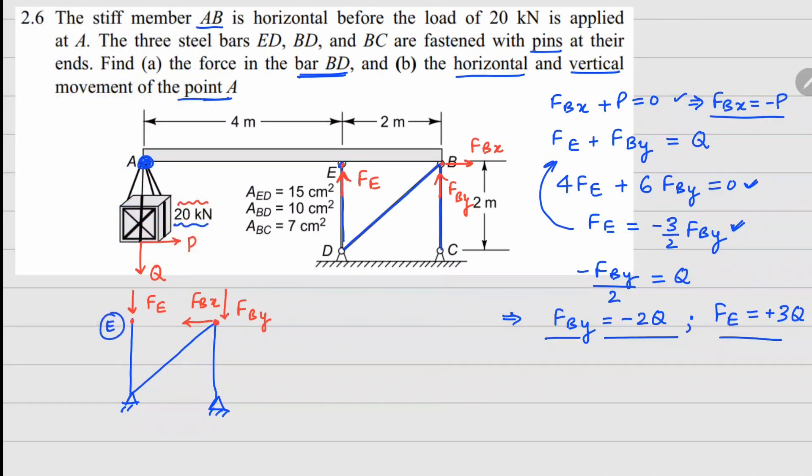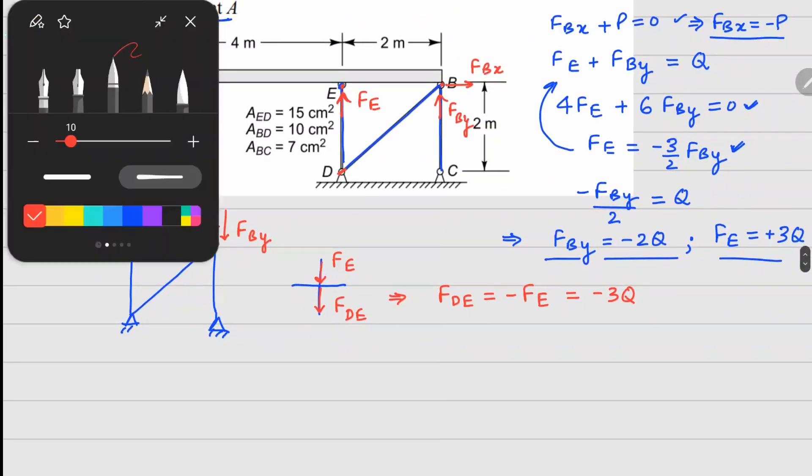Now if I start analyzing these individual joints, let's look at joint E first. On joint E, the forces that we have are this Fe pointing downwards and this member FED between D and E. If you draw it away from the joint, then this is the setup we have. From this we can figure out your FDE is minus Fe, which is minus 3 times Q.